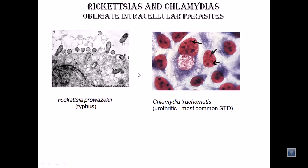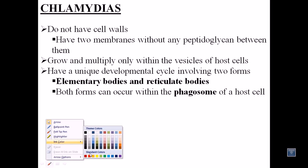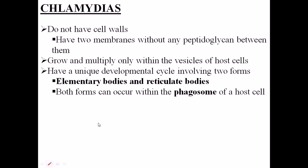First let us talk about Chlamydia. Chlamydia does not have any cell walls. Instead, they have two cell membranes attached to each other to make a tough structure. These two cell membranes are actually preventing Chlamydia from outer damages. They grow and multiply only within a vesicle of a host cell — that is a very important point.